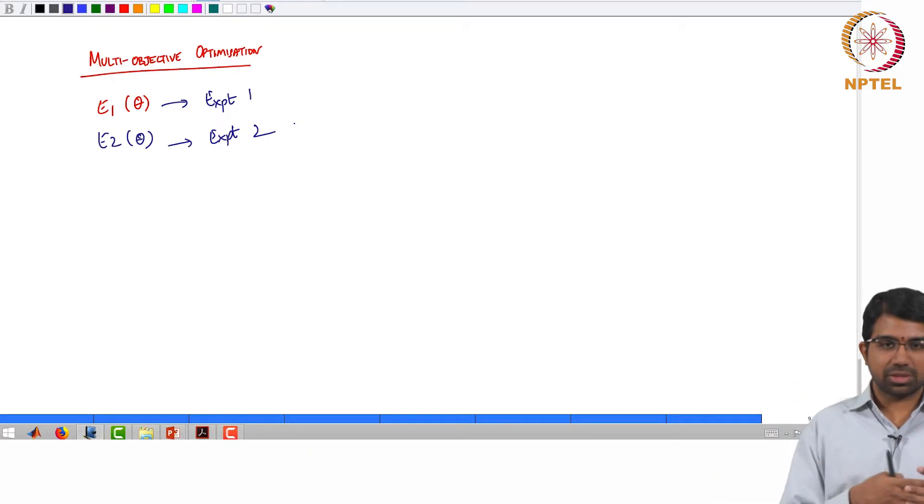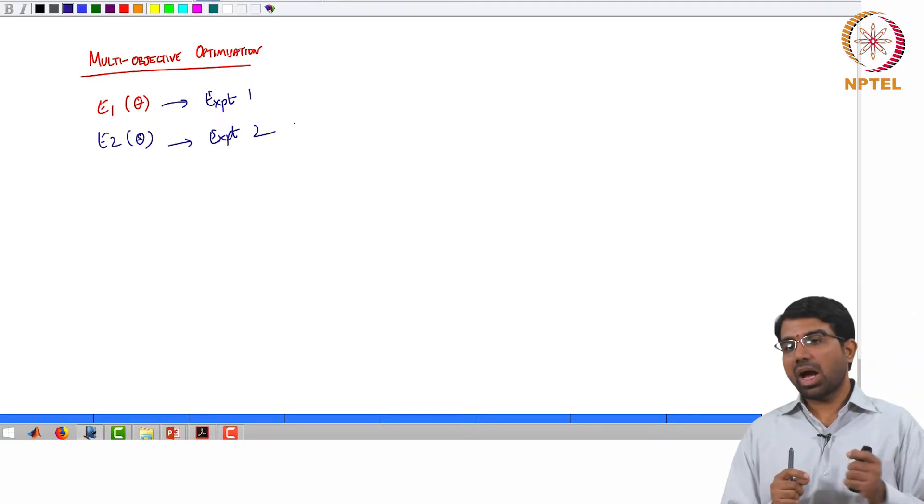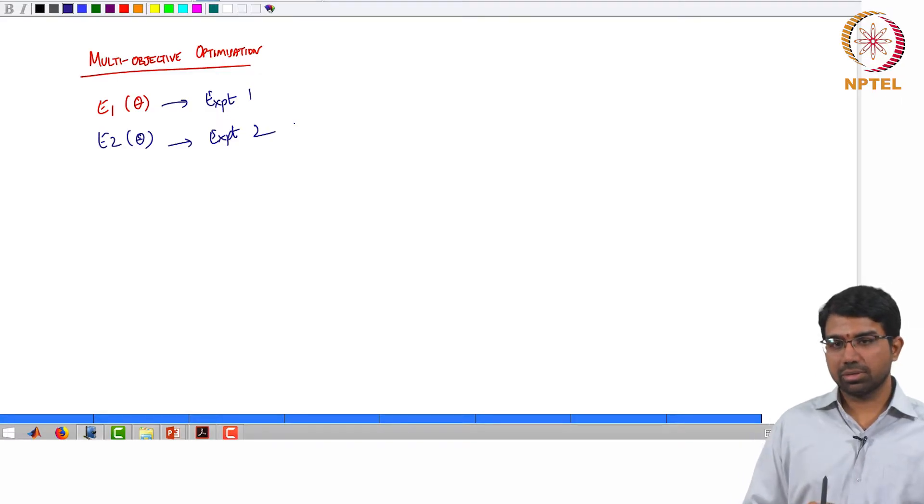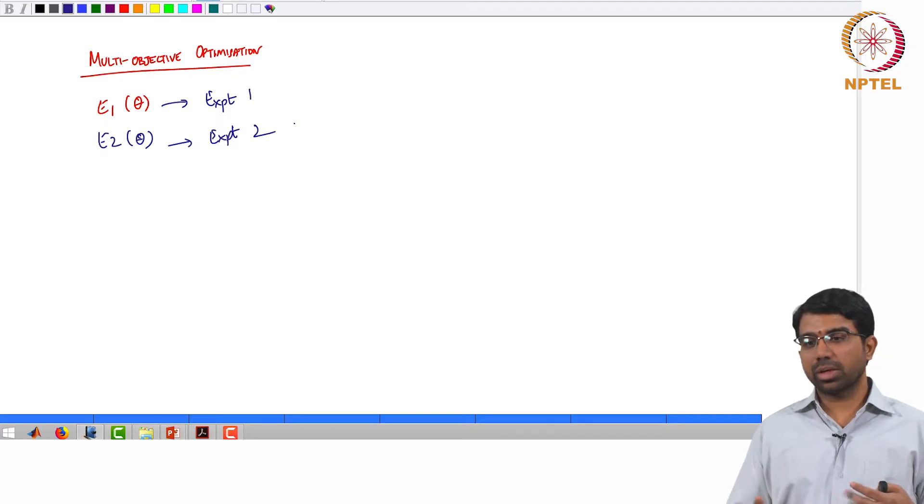And you may want to jointly optimise them or separately optimise them. But the moment you have 2 objective functions, how do you say what is the best solution? Because if I have 1 objective function, I would say give me the theta that minimises E of theta. Now the one that gives you low E1 may give you high E2 and vice versa. So you will have to start worrying about it.